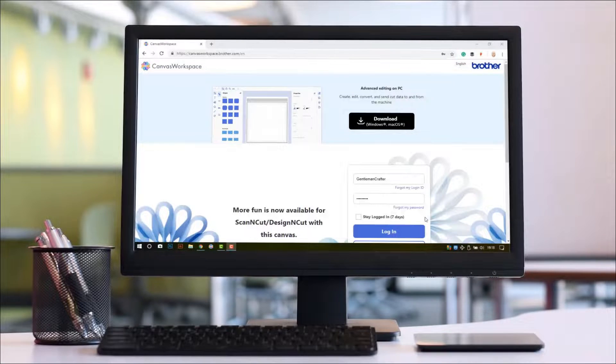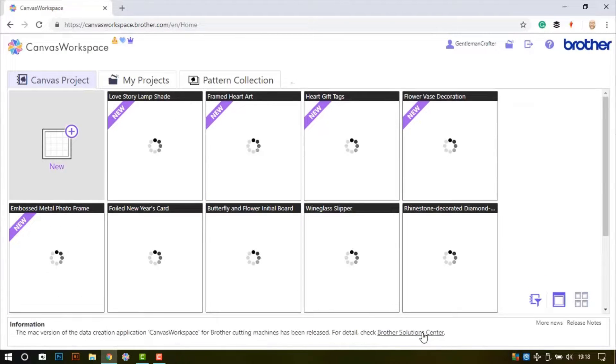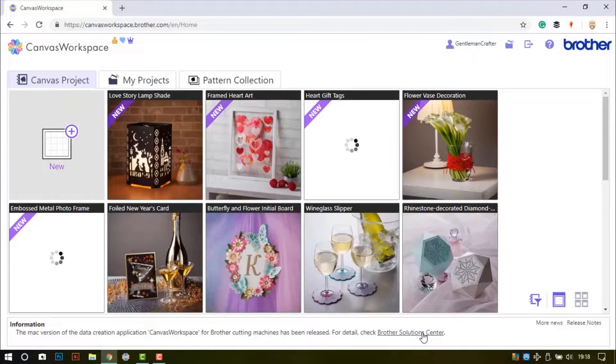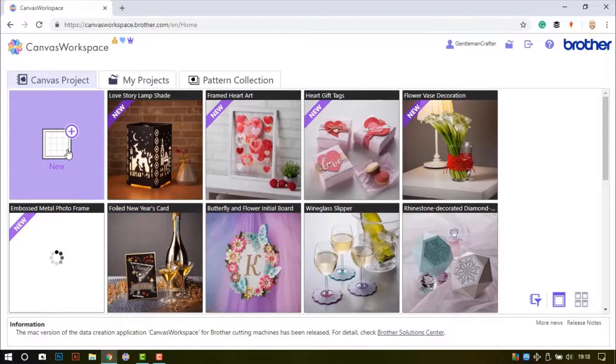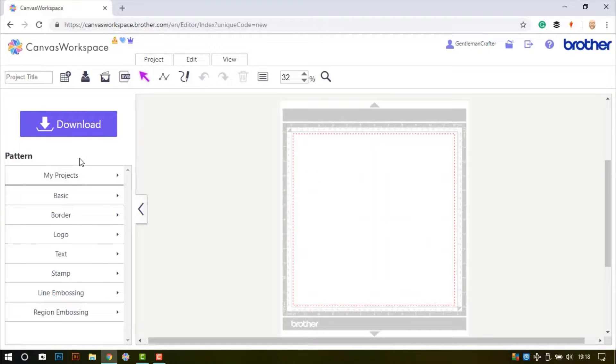To begin I log into my account on canvasworkspace.brother.com. In this instance I start a new project however I can simply go straight to my account by clicking on the account name at the top right of the screen. Mine says Gentleman Crafter as that is what I have chosen as my username.